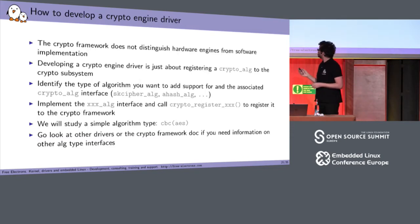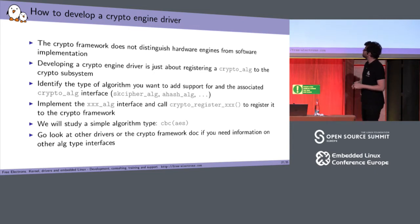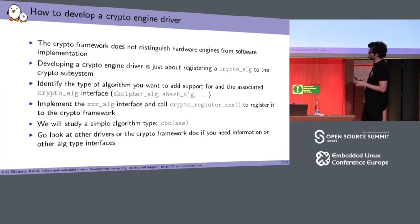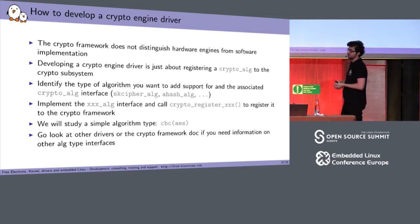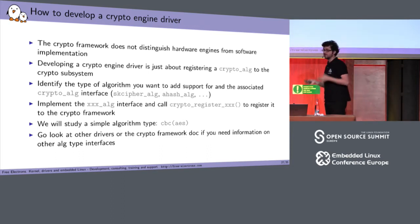Now let's look at how to develop a crypto engine driver. From the crypto API's point of view, a crypto engine is just an implementation of a specific algorithm. The crypto API does not distinguish between pure software implementations and those using dedicated engines. So developing a crypto engine driver is simply about implementing and registering a crypto_alg interface. Most of the time you don't implement crypto_alg directly — you implement something that inherits from it, since crypto_alg is the base class. Then you register it using crypto_register_something, where 'something' is the type of crypto algorithm.